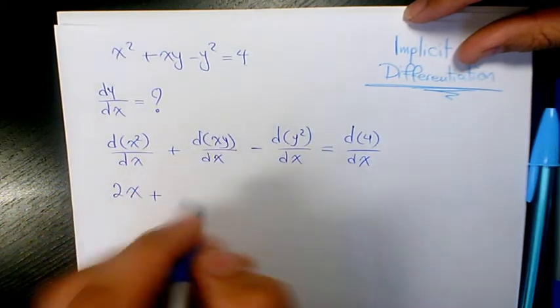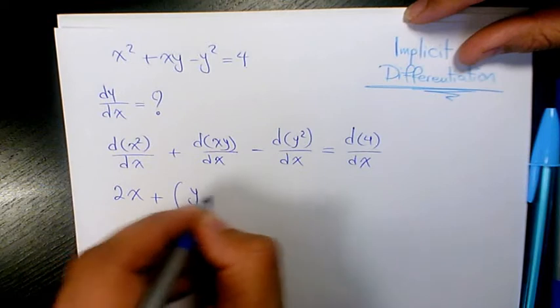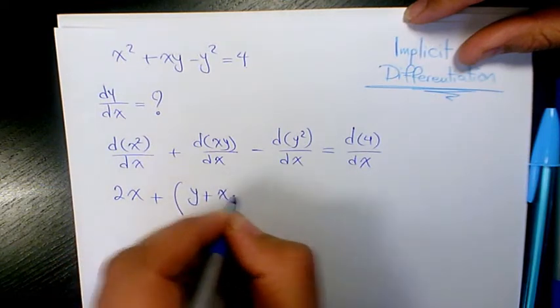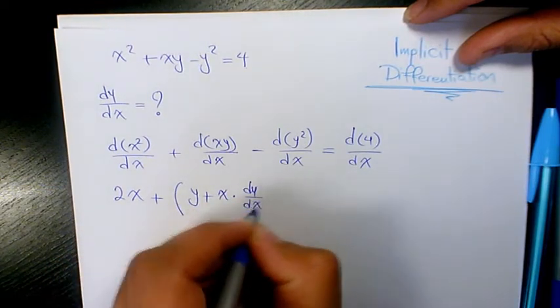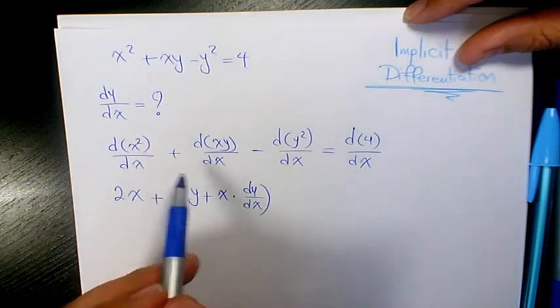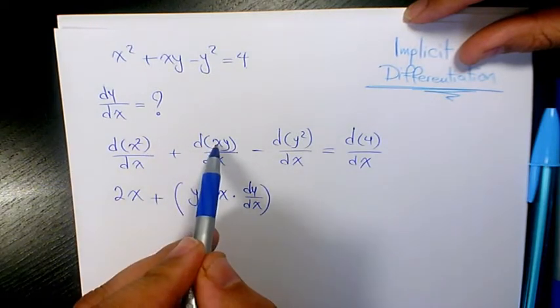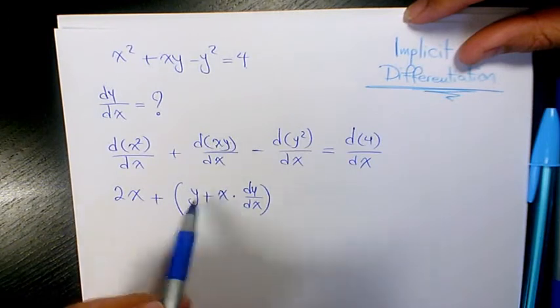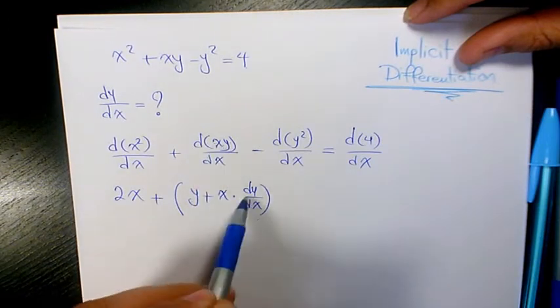The derivative of xy is y + x·(dy/dx) because we use the product rule, which is the derivative of x (which is 1) times y, plus x times the derivative of y with respect to x.